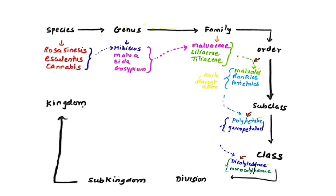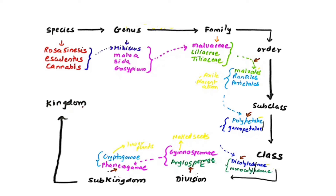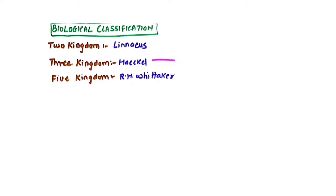There is also subclass Gamopetalae, meaning fused petals. Polypetalae and Gamopetalae belong to the same class Dicotyledonae. Dicot and monocot are two different classes but share some similar characteristics, so they belong to one division: Angiospermae. Angiosperms and Gymnosperms share some characteristics, so they belong to the sub-kingdom Phanerogamae. Phanerogamae and Cryptogamae both belong to the kingdom Plantae. As we move from species to kingdom, similarities keep decreasing.